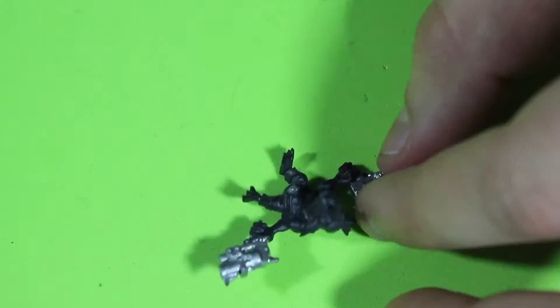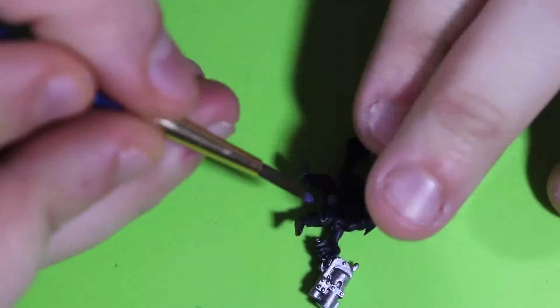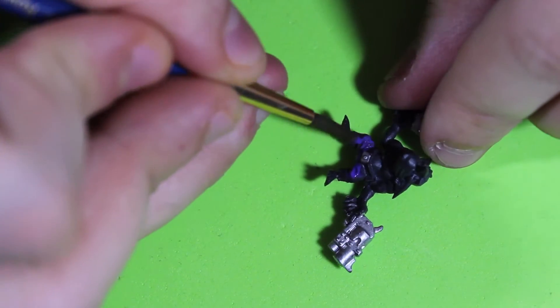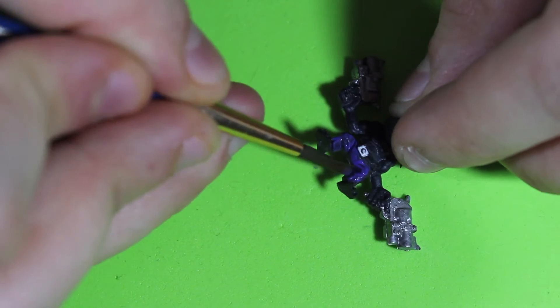The thing that sucks about Gretchens is that they're really small, so you need a super fine brush and a good eye to paint all the details. Now I'm taking a purple from Craftsmart and painting the pants of this Gretchen purple.